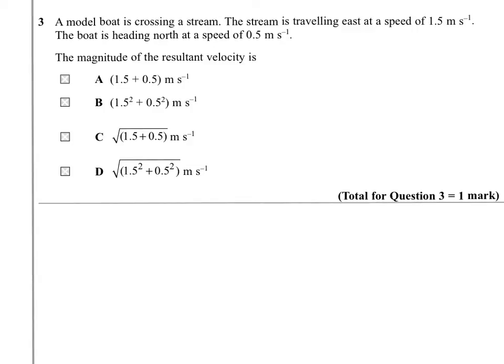A model boat is crossing a stream. The stream is travelling east at a speed of 1.5 meters per second. The boat is heading north at a speed of 0.5 meters per second. The magnitude of the resultant velocity will be. So the stream is going east at 1.5 meters per second. And the boat is heading north at 0.5 meters per second. Those two are going to add together.